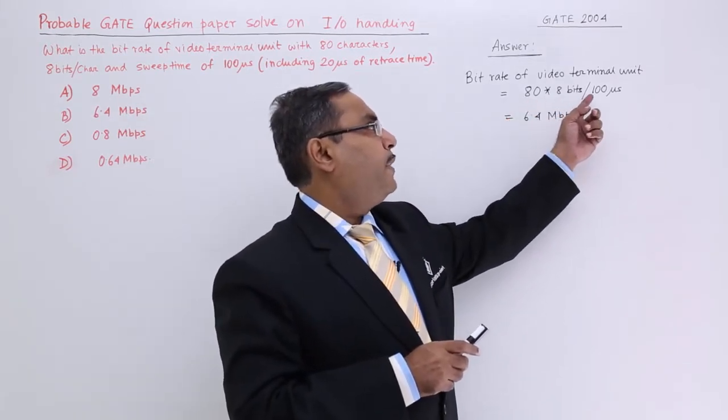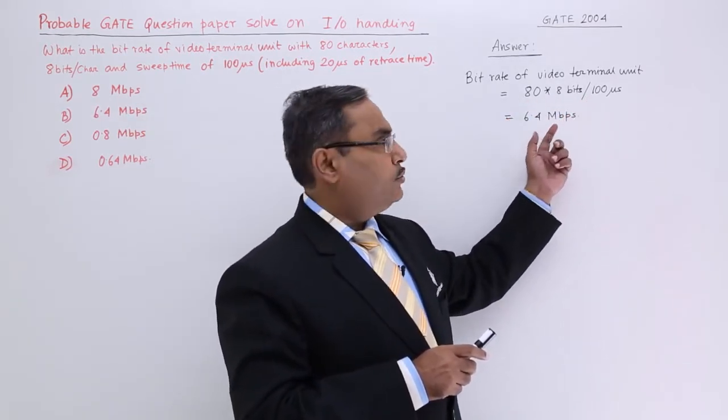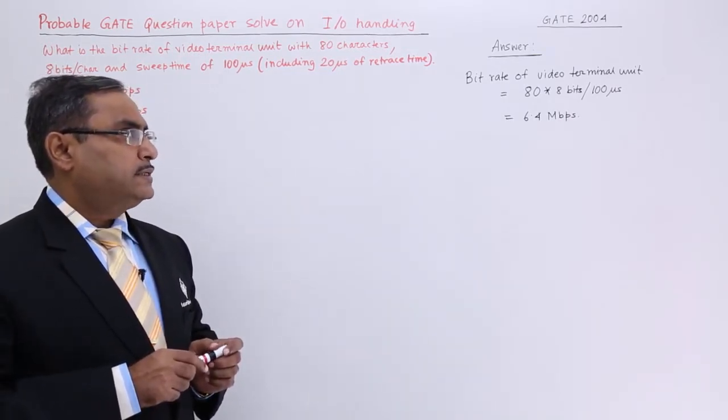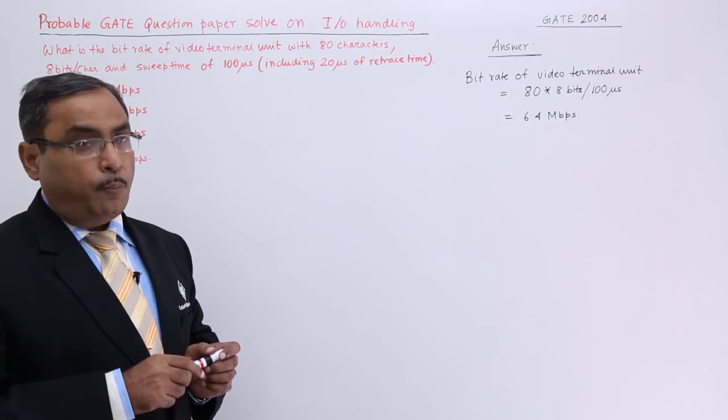So it is 640 by 100. Obviously, you will be going to get 6.4 Mbps. That is the total computation.